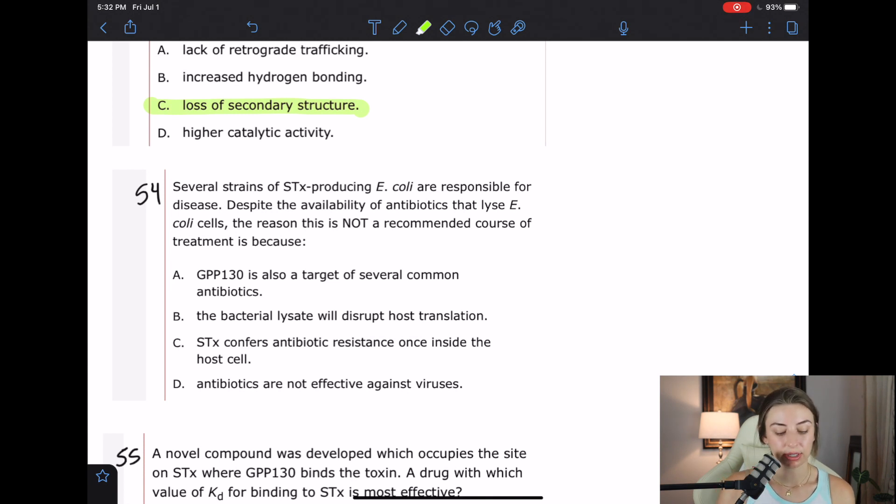A says GPP-130 is also a target of several common antibiotics. So remember that GPP-130 was a host protein. And so probably not going to be the target of antibiotics, which typically go for bacteria. B says the bacterial lysate will disrupt host translation. So I'm assuming lysate means whatever comes out when you lyse a cell or basically like bust a cell. So if these E. coli cells are chock full of Shiga toxin and we bust them open, I'm imagining that the Shiga toxin is probably going to hurt the cells that it's going into. I think that's the point. So I like that one. C says Shiga toxin confers antibiotic resistance once inside the host cell. I don't really know what that means. And it's also not mentioned in the passage. So I'm not loving that answer.